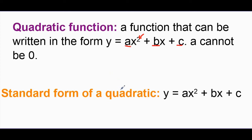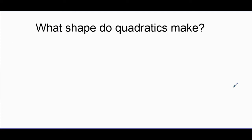The standard form of a quadratic is Y equals AX squared plus BX plus C. Again, A, B, and C are all very important. Now, I just talked about basketball, and there's a reason for it — the question that comes up is, what shape do quadratics make? Let's take a look at an example: let's graph Y equals negative 2X squared plus 3X plus 2.